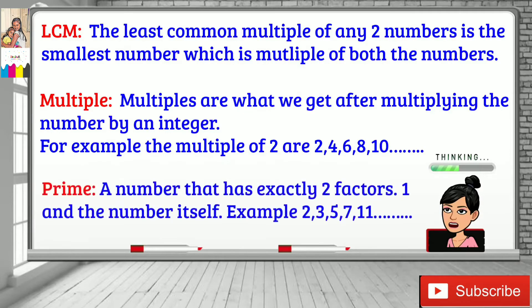Prime number: a number that has exactly two factors, which is one and the number itself. Examples: 2, 3, 5, 7, 11, and so on.